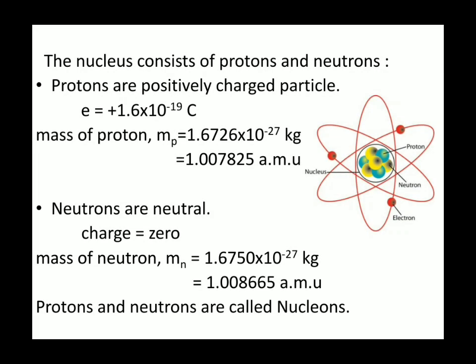The nucleus has its own structure and consists of protons and neutrons. The protons are the positively charged particles inside the nucleus, having a charge of 1.6 times 10 to the power minus 19 coulomb and a mass of 1.6726 times 10 to the power minus 27 kg. But since they are so small, they are actually calculated in atomic mass unit, which is 1.007825 atomic mass unit.